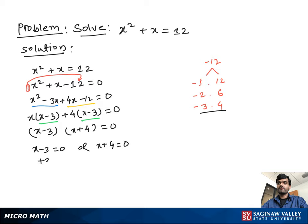If we add 3 on both sides, we get x equal to 3. If we subtract 4 from both sides, we get x equal to negative 4. So our final answer is x equal to positive 3 or x equal to negative 4.